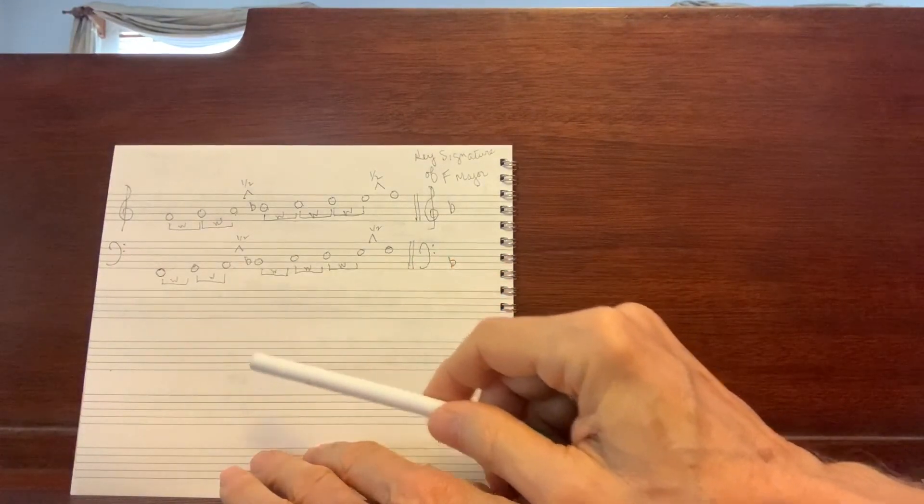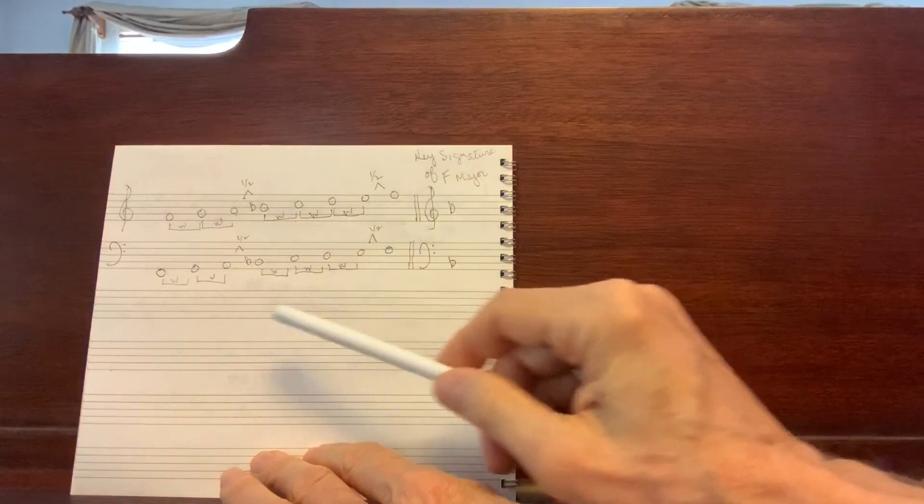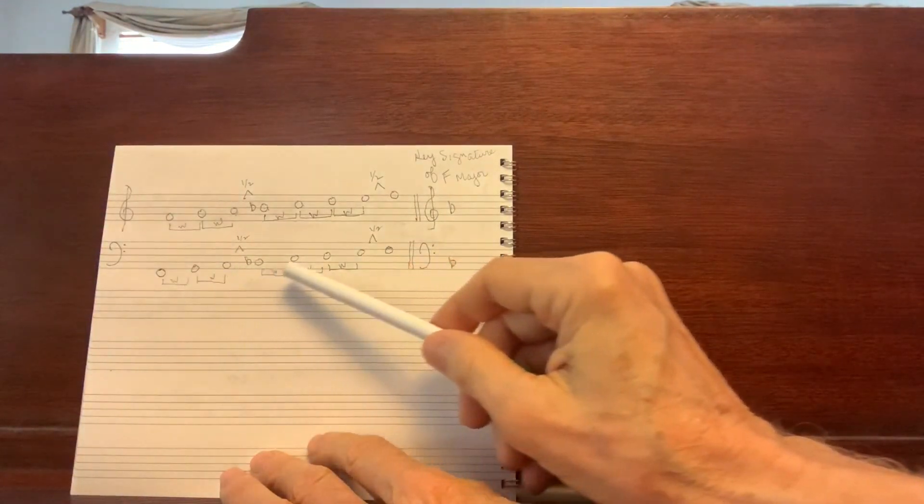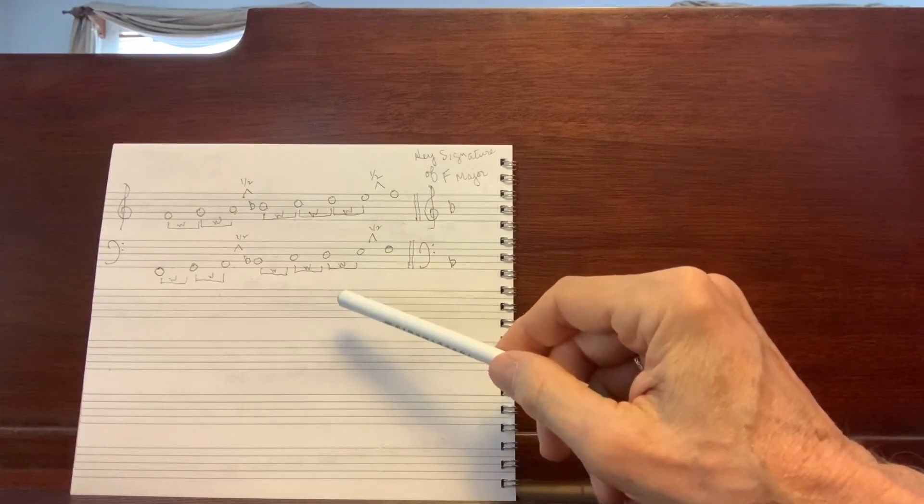Let's add the B flat now. F, G, A, B flat, C, D, E, F. A little faster. Terrific. And that's it for the bass clef going up.